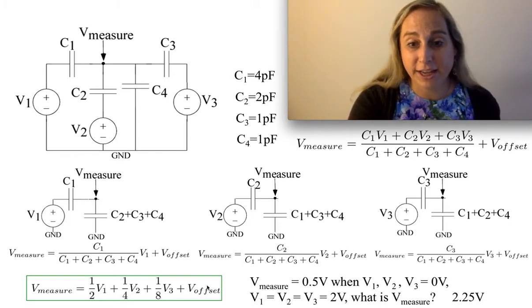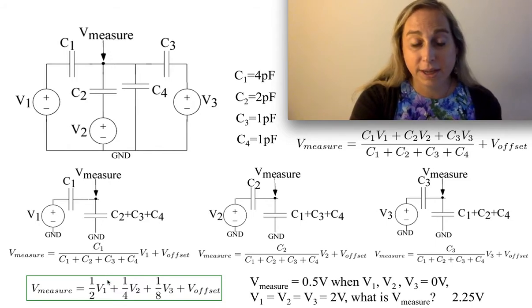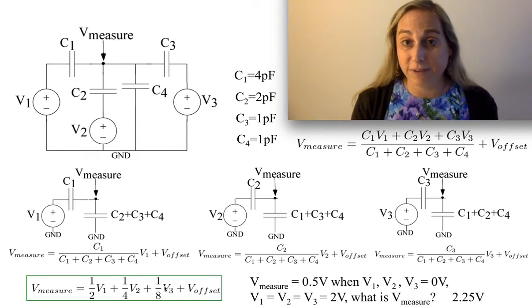So you could imagine, say, if I had V1, V2, and V3 at 2 volts, that would give me, well, this would turn out to be 1, this would be a half, and this would be a quarter. So I get 1.75.